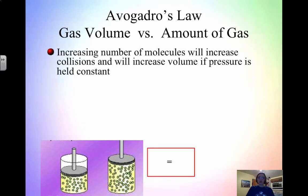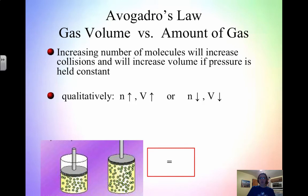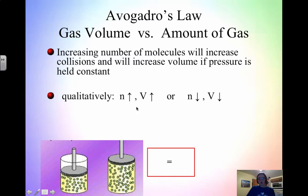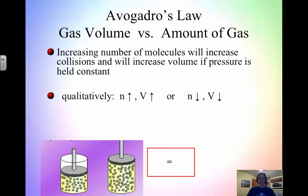With Avogadro's Law, when you increase the number of molecules, you increase collisions, and therefore volume increases if pressure is held constant. Qualitatively, as number of moles goes up, volume goes up. As number of moles goes up, you're adding more molecules, increasing collisions, which increases pressure — but pressure needs to stay constant. So if pressure was increased, we need to expand the volume to get the pressure back down.